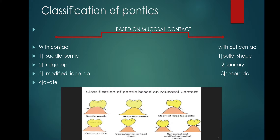Ridge lap resembles the normal tooth but can also cause inflammation due to pressure on the alveolar mucosa. Modified ridge lap and ridge lap pontics are evolved from saddle pontics.